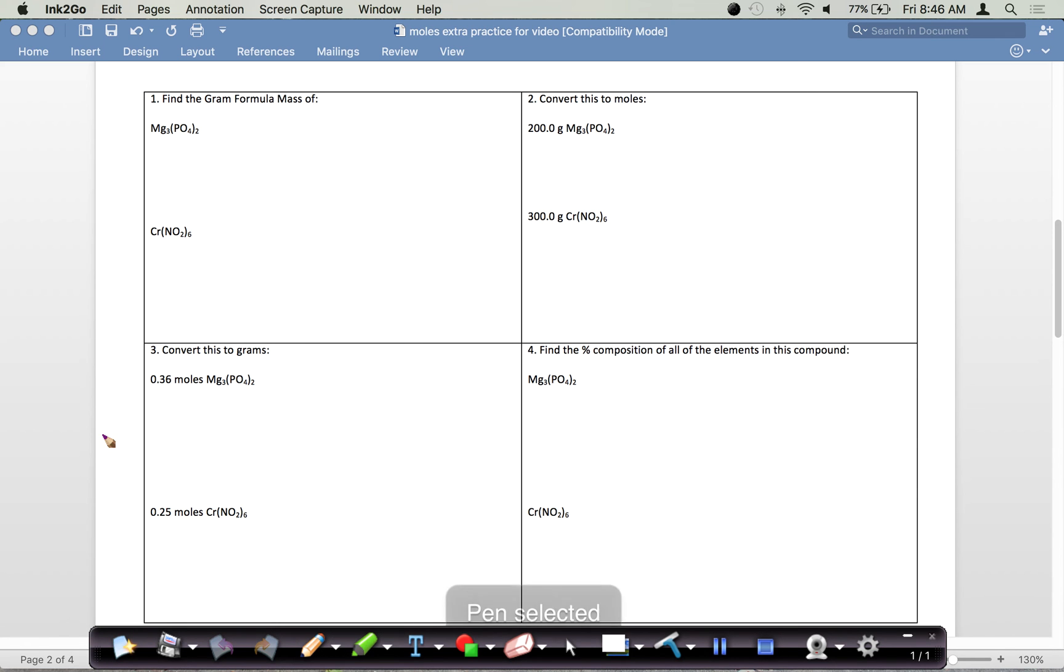If we look at the first one, it says to find the gram formula mass. Remember, when we're finding the gram formula mass, you need your periodic table and a calculator. For the first one, we're going to multiply Mg times 3 because of this subscript of 3. On the periodic table, we round magnesium's mass to the nearest tenth, and when we multiply by 3, we get 72.9.